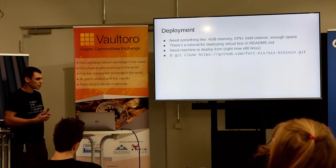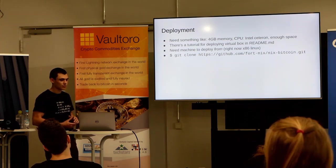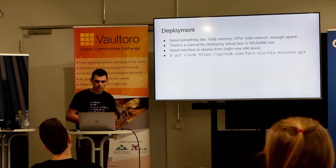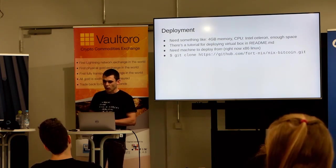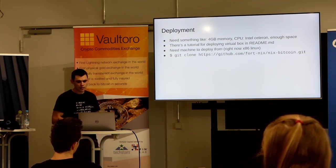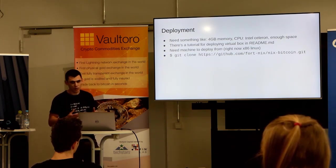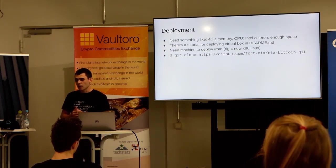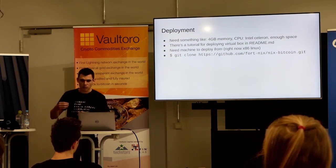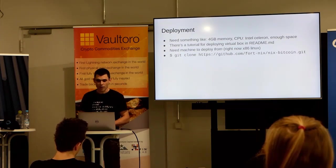Before you do deployment, you need to ask yourself where you want to deploy it — you need a target. You'll have most fun if you have at least four gigabytes of memory. CPU-wise, it doesn't work on ARM or at least it's not tested for most modules, so you need an Intel — but it can be a relatively weak one. You need enough space depending on what you want to do; CLightning, for example, doesn't work really with pruning right now, so you need to store the whole chain. There's a tutorial for deploying the whole thing on VirtualBox in the README if you just want to try it out. You also need a machine to deploy from — this would be your personal laptop, and this is also where the packages are built right now.